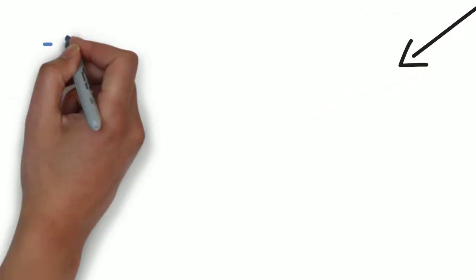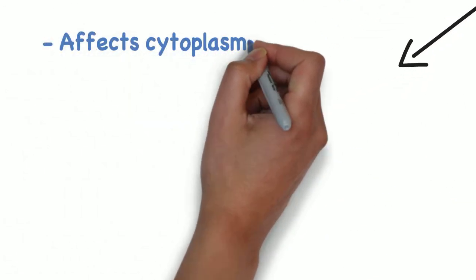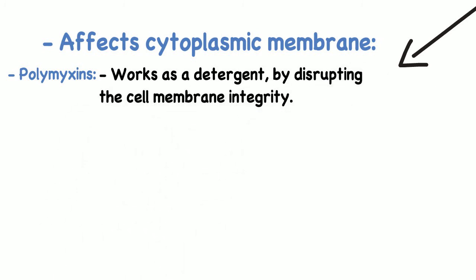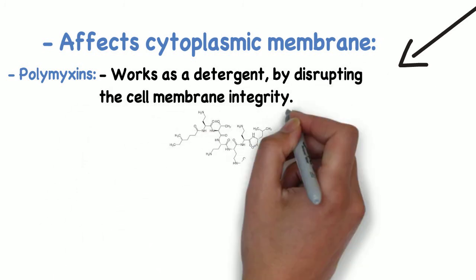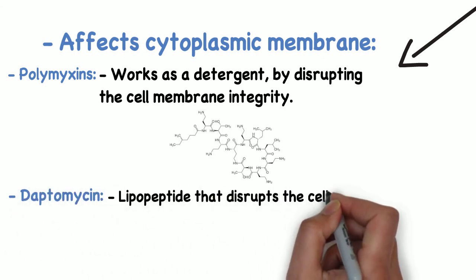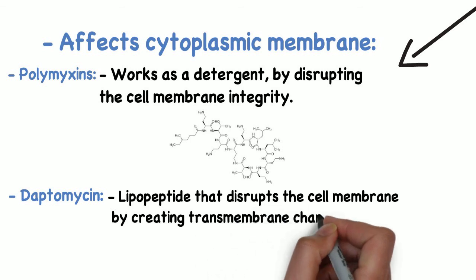At last, let's talk about antibiotics that affect the cytoplasmic membrane. These include polymyxins, which work as a detergent by disrupting the cell membrane integrity, and also daptomycin, which is a lipopeptide that disrupts the cell membrane by creating transmembrane channels.